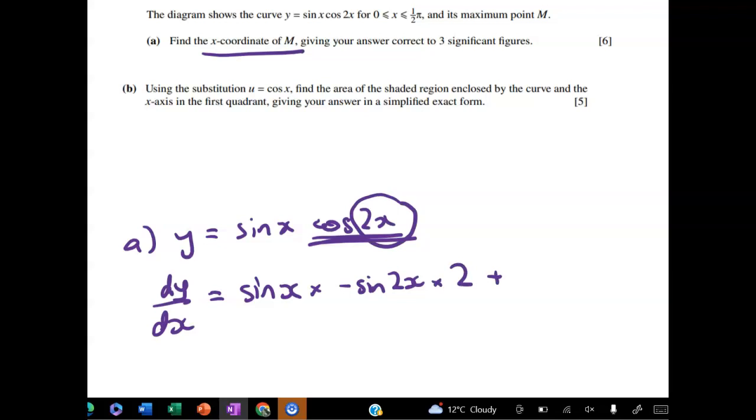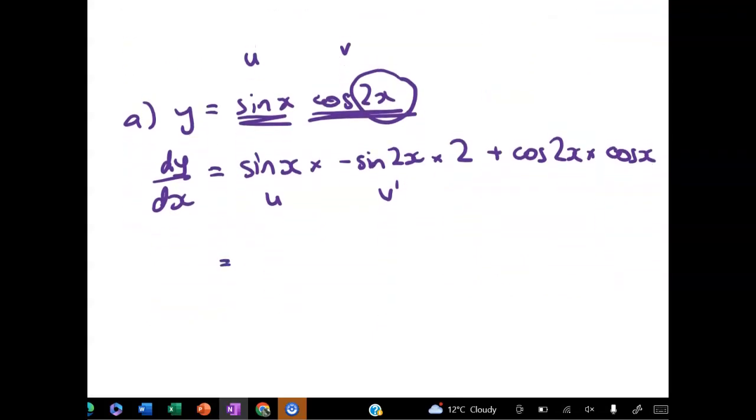And now I'm doing the second half of my product rule. So this is u and this is v. So I've done u v dash, and now I'm doing the other way around. So it's plus cos of 2x times cos of x. So let's just clean that up before we do anything else. So we get negative 2 sin x sin of 2x plus cos of 2x cos of x. That has to equal zero for a stationary point. And some kind of communication like that's important.